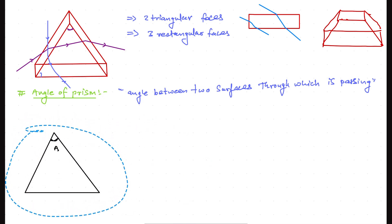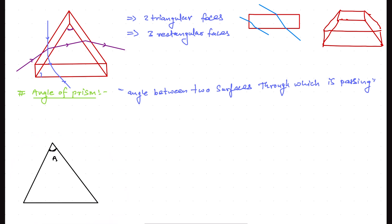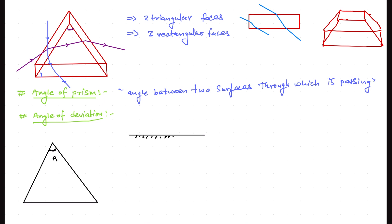There is another important quantity: the angle of deviation. As you may know from the concept of reflection, the angle of deviation is the angle between the incident ray and the final reflected or refracted ray. So if the surface has a ray incident at angle i, it reflects at the same angle i. The angle between the initial direction and the final direction is our angle of deviation, called delta.